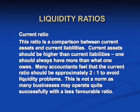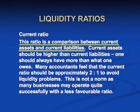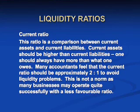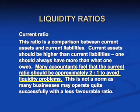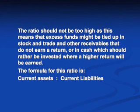Liquidity ratios measure the ability for a business to meet its short-term debts — a comparison between current assets and current liabilities. Current assets should be higher than current liabilities. Many accountants feel the current ratio should be approximately two to one to avoid liquidity problems, though this is not a norm as many businesses may operate successfully with a less favorable ratio. The ratio should not be too high, as this means excess funds might be tied up in stock and trade receivables that do not earn a return rather than being invested where a higher return will be earned.